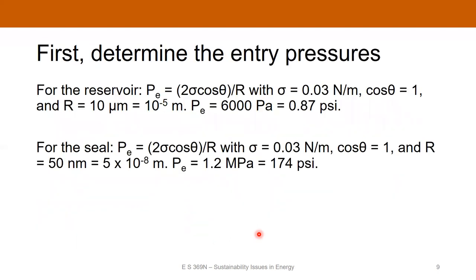The first thing we need to do is determine the entry pressures for the seal and the reservoir. For the reservoir, we know it's a cylindrical pore, so we use Washburn's equation to get the entry pressure. Capital R is the largest pore radius — we know that's 10 microns, equal to 10 to the minus 5 meters. Sigma, the interfacial tension, is 0.03. Theta is zero, so cosine theta is one. This gives us an entry pressure of 6,000 pascals, which equals 0.87 psi — a very small but non-zero entry pressure.